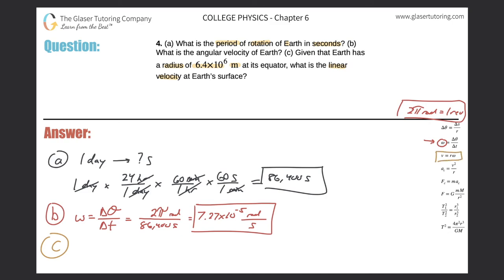I could write it like this: v sub t for tangential velocity is equal to the radius of the circle multiplied by the angular velocity. So do we know the radius? Well, they just told us in the problem, it's 6.4 times 10 to the 6th. Take that and multiply it by your angular velocity, so it becomes 7.27 times 10 to the minus 5th.